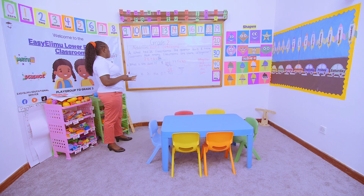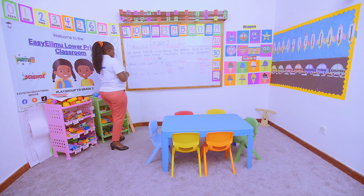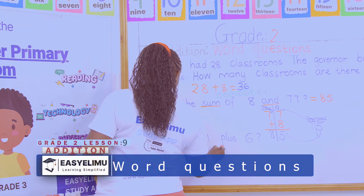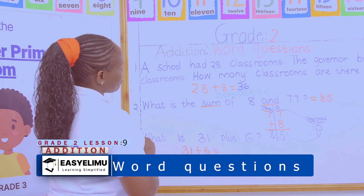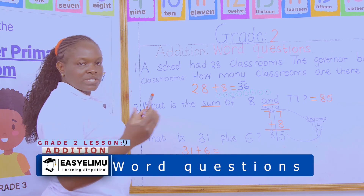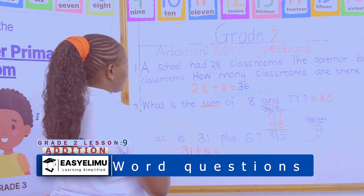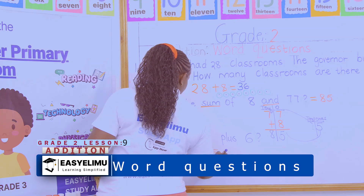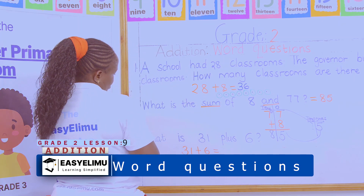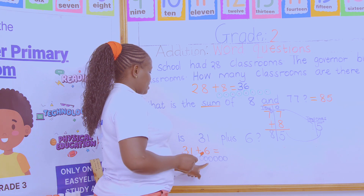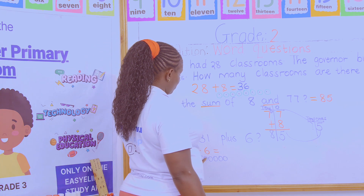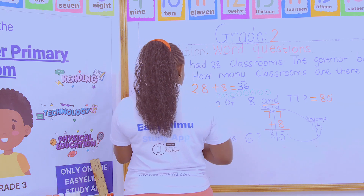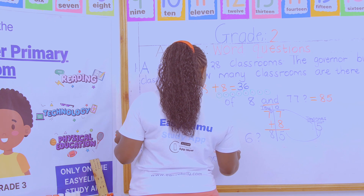Let's look at example 3: what is 31 plus 6? Which method do you prefer? We count on — very good! You can also use the place value chart or the number line; all those methods are okay. So: 31 in the head, 6 fingers out — 32, 33, 34, 35, 36, 37. What is 31 plus 6? It is 37.